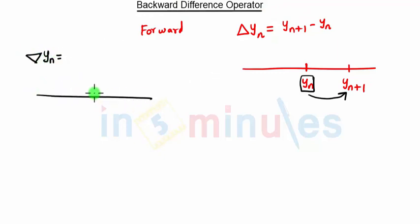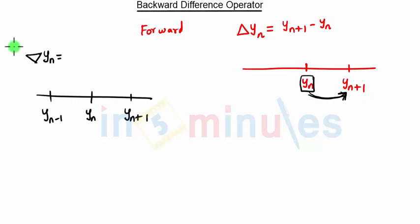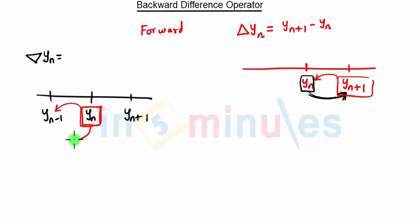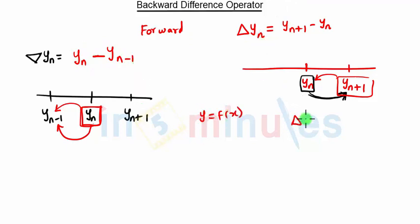Now we have the backward difference operator, which is represented by the inverted delta (∇) of y(n). Here, instead of taking the difference with the next term, we take the difference of the current variable minus the previous variable. So the backward difference is: ∇y(n) = y(n) - y(n-1).